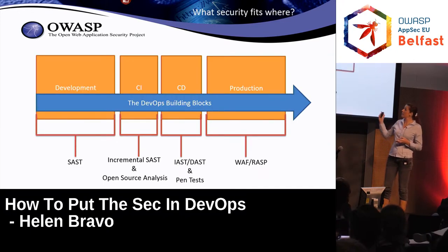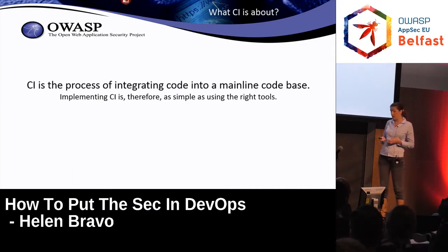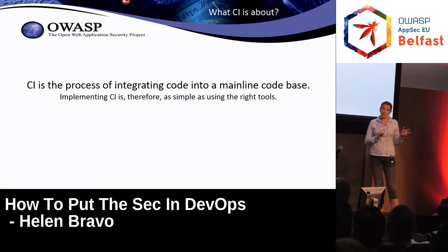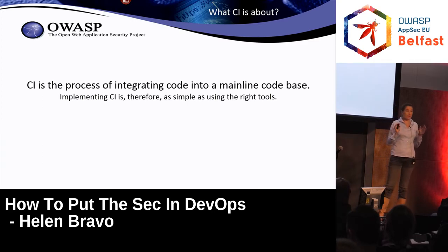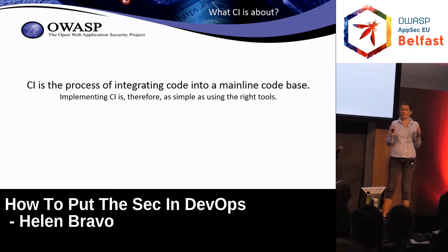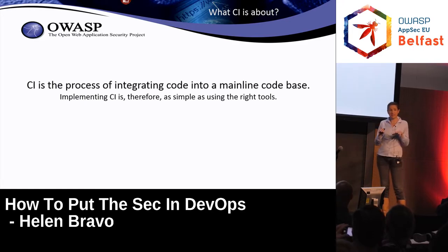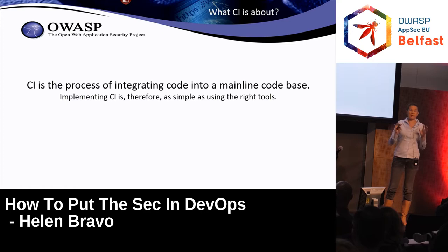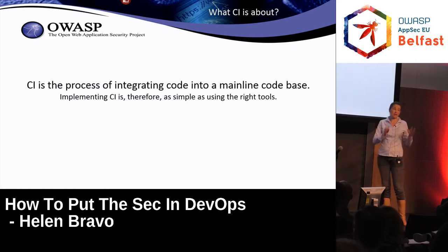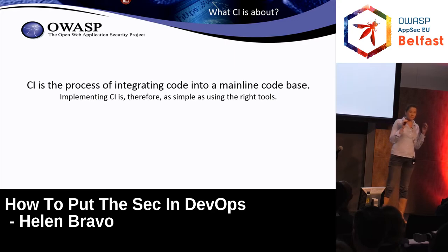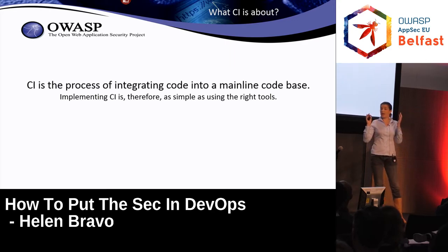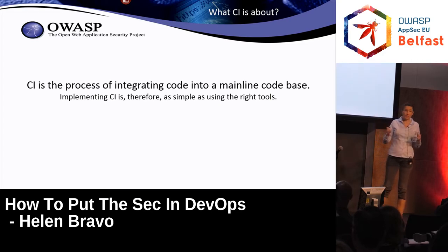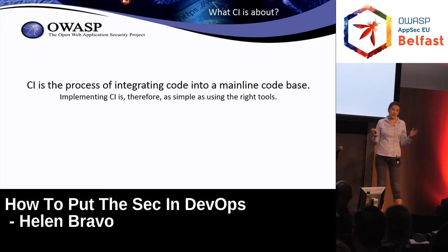The next blocks are CI and CD, and that's an area of a lot of confusion — what CI stands for, what CD stands for. If you ask people, many will say different things. CI is basically only the build process: taking the code committed by the developer, adding it to the mainline, and making sure it doesn't break the mainline.